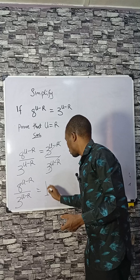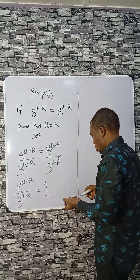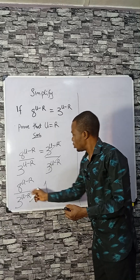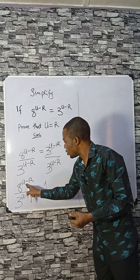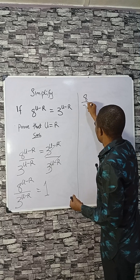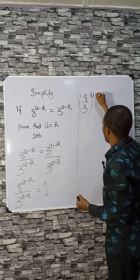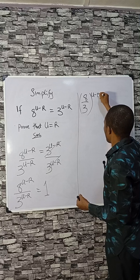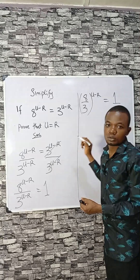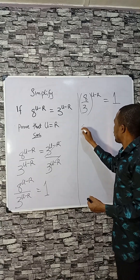The other side becomes 1. Now, since we have the same power here and here, we can combine: 8 divided by 3, all raised to the same power u minus r, equals 1.